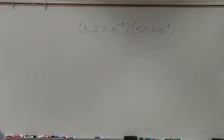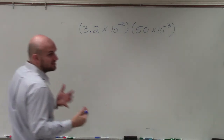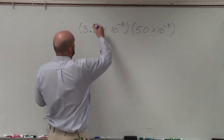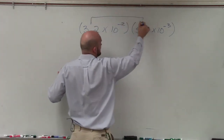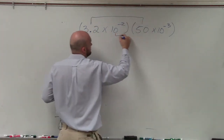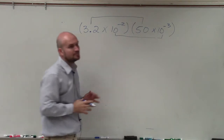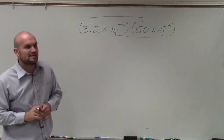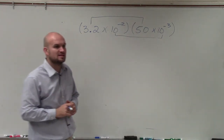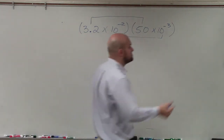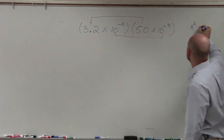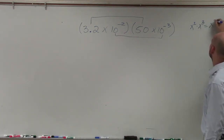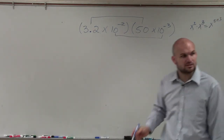We're doing the product of scientific notation. Basically, what we're doing is we're going to multiply our a's and then apply the properties of exponents with our powers of 10. So if you guys remember the properties of exponents — if I had x squared times x cubed — all we're simply going to do is add the exponents.